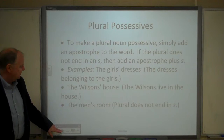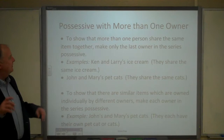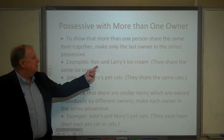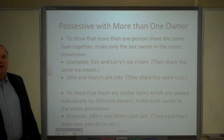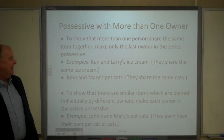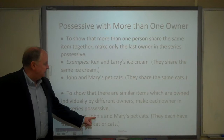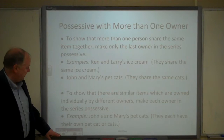To show that more than one person shares the same item together, you make only the last owner in the series possessive. For example, 'Ken and Larry's ice cream' — made by two men, but it's one ice cream, so the apostrophe S comes at the last name. 'John and Mary's pet cats' — John and Mary own the cats together. But if they own similar items individually, you make each owner possessive: 'John's and Mary's pet cats' would mean John had separate cats and Mary had separate cats.